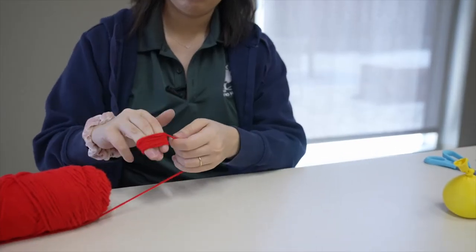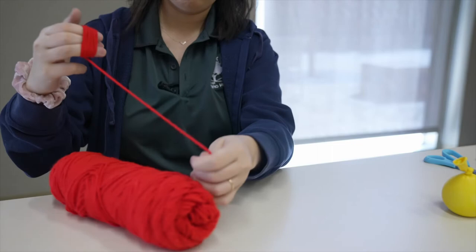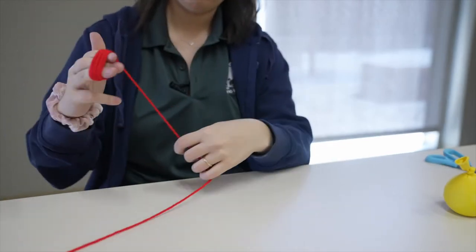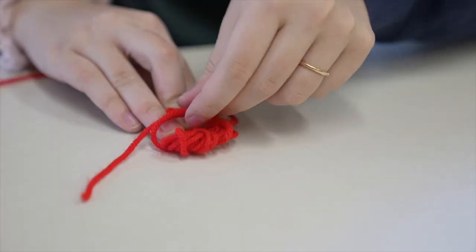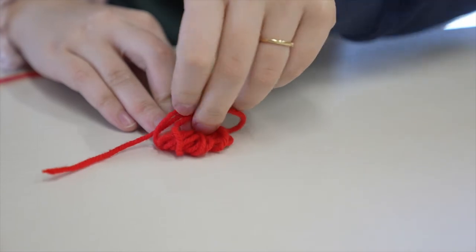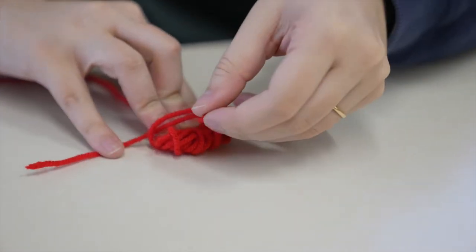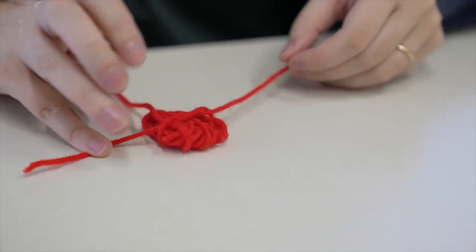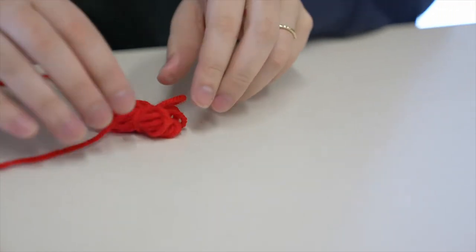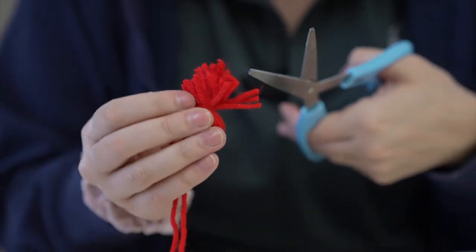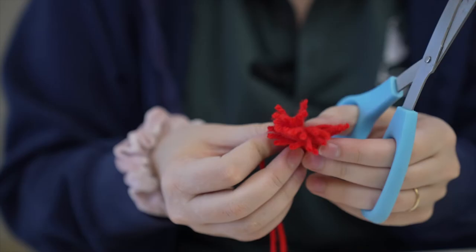If you'd like to add some hair, take some yarn and wrap it around three of your fingers a few times. Remove the bundle from your fingers and tie it together in the middle using a longer piece of yarn. Cut open the loops at each end and tie the longer string around the knot around the balloon.